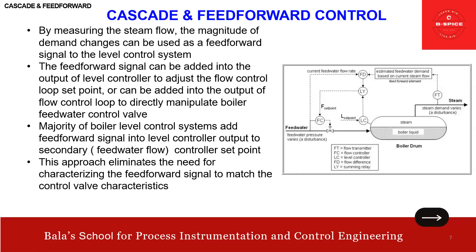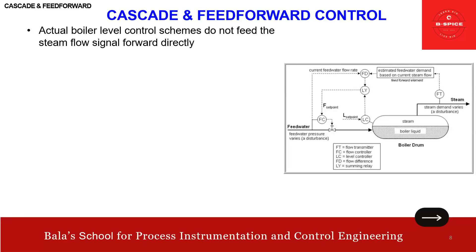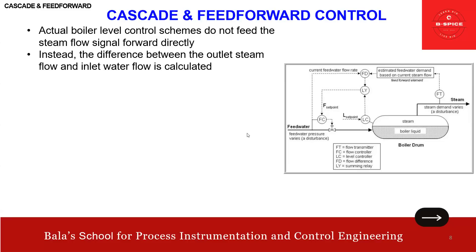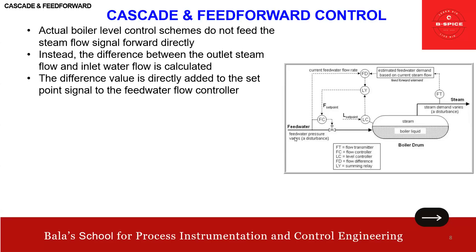However, actual boiler level control schemes do not feed the steam flow signal directly. Instead, the difference between the outlet steam flow and the inlet feed water flow is calculated, and this difference is directly added to the set point signal to the feed water flow controller. That is the actual boiler level control scheme used in practice.